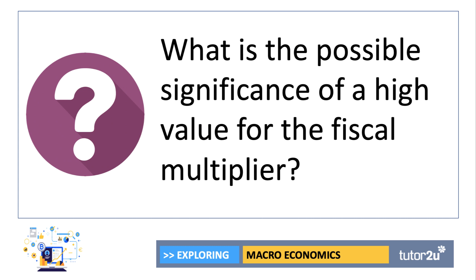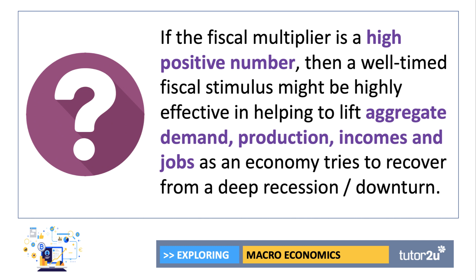So what is the possible significance of a high value for the fiscal multiplier? It's important to put things in context. Here we are in the summer of 2020 with the UK economy already in recession and the IMF forecasting that in 2020 the level of national output may well contract by more than 10%. So if the fiscal multiplier is high and positive, then perhaps a well-timed, targeted fiscal stimulus could be effective in helping to lift aggregate demand, production, factor incomes and ultimately jobs, as the economy tries to rebound from a deep recession.